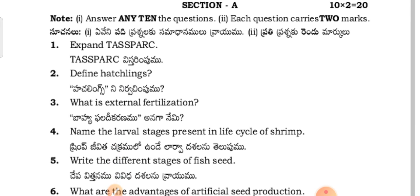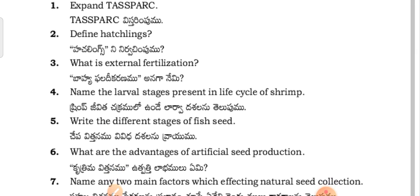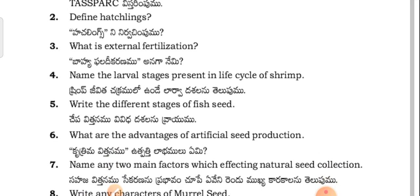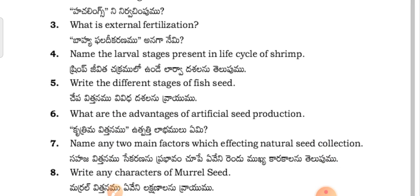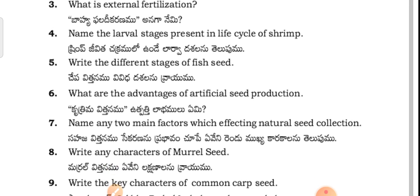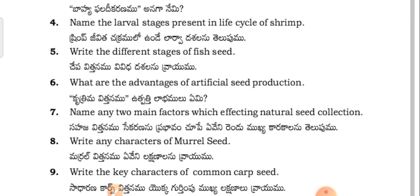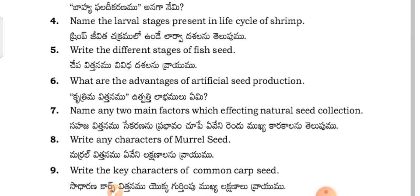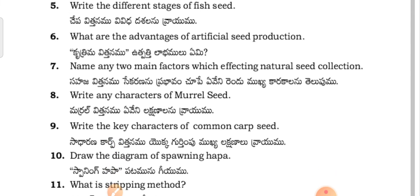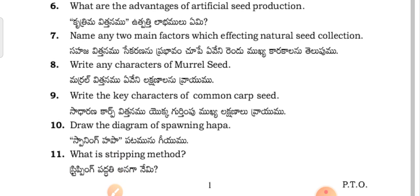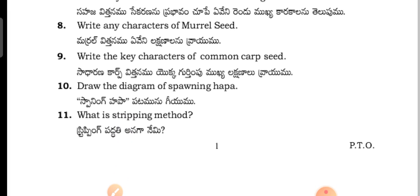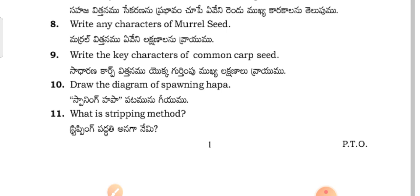Section questions include: Define hatchlings. What is external fertilization? Name the larval stages present in the life cycle of Shari variety. What are the different stages of fish seed? What are the advantages of artificial seed production? Name any two main factors affecting natural seed collection. Write the characteristics of Murrel seed.